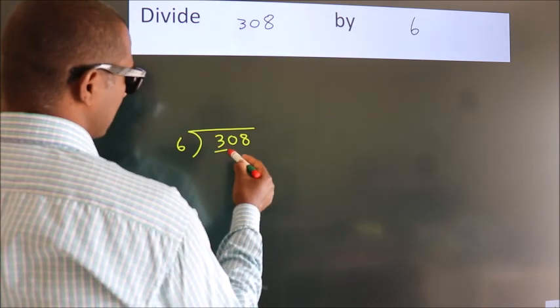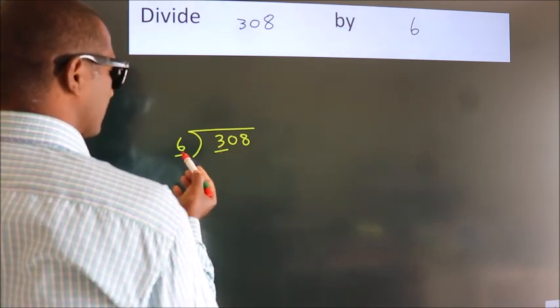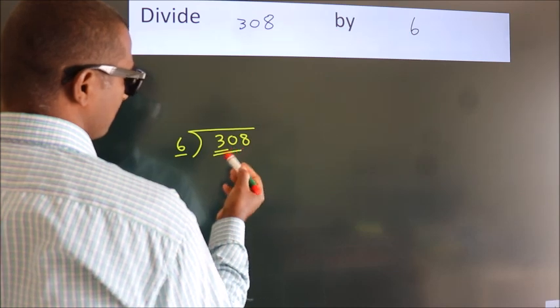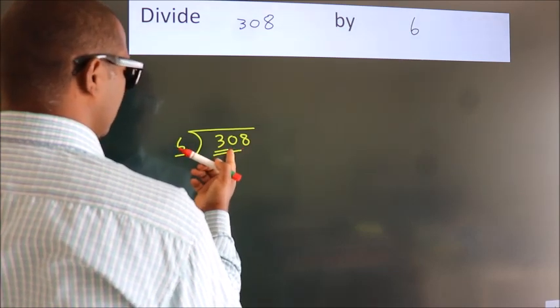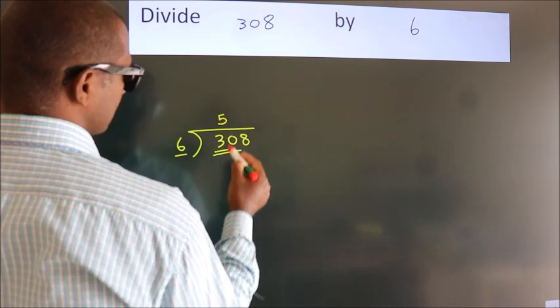here we have 3, here 6. 3 is smaller than 6, so we should take 2 numbers, 30. When do we get 30? In 6 table, 6 fives, 30.